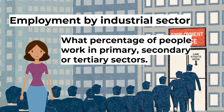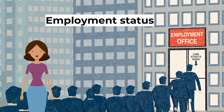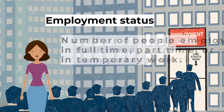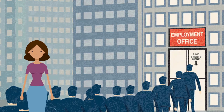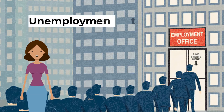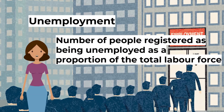Employment status is the number of people employed in full-time, part-time, or temporary work. Finally, unemployment is the number of people registered as being unemployed as a proportion of the total labor force. This is often called the unemployment rate.